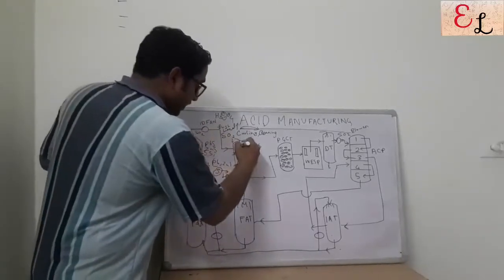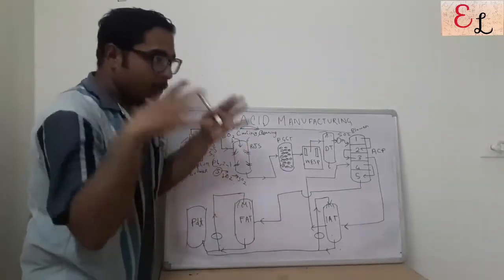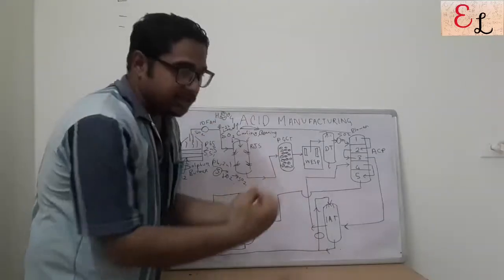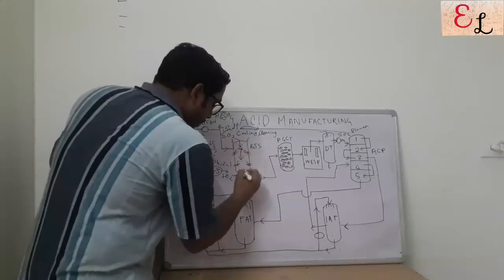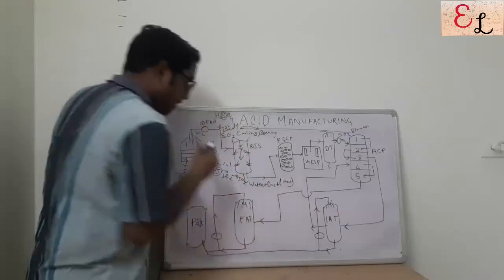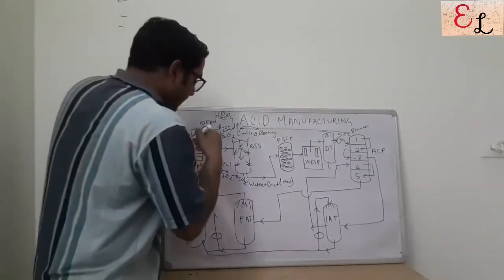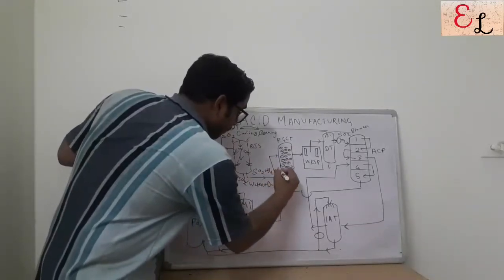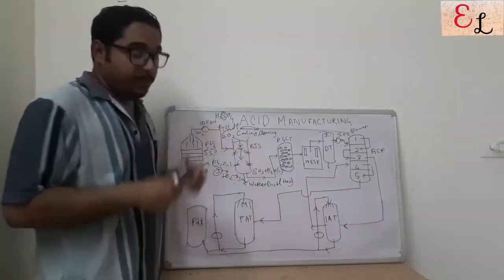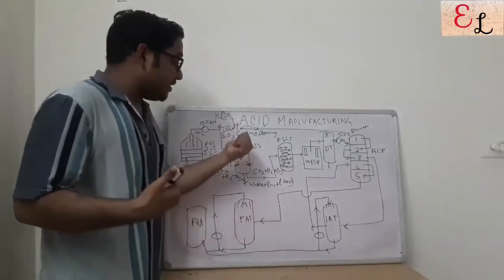In a reverse jet scrubber, the SO2 gas comes into the chamber and nozzles spray water in a counter-current direction, so adiabatic cooling occurs. The water wets the dust particles and they settle down — the water that settles down is essentially water plus dust and is hot. The SO2 gas cools down by adiabatic cooling, and in the process some amount of water vapor goes out with the gas. So SO2 is associated with some H2O in vapor form. Both adiabatic cooling and sensible cooling occur in a reverse jet scrubber.